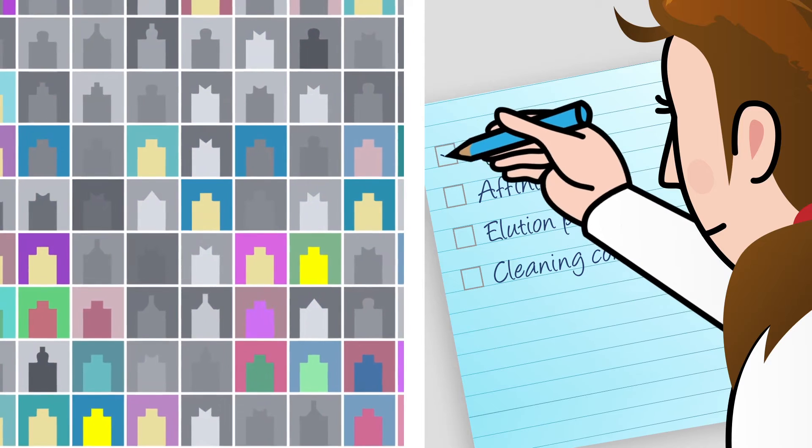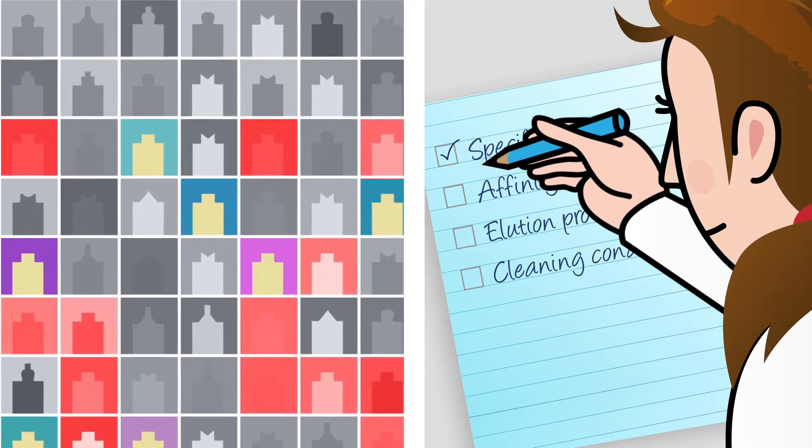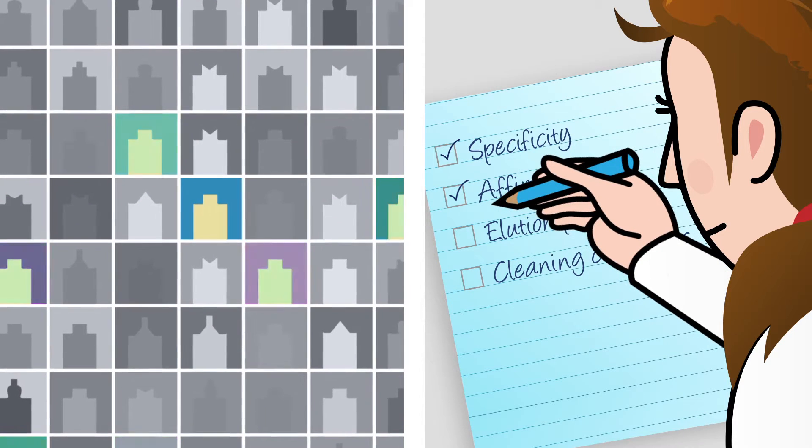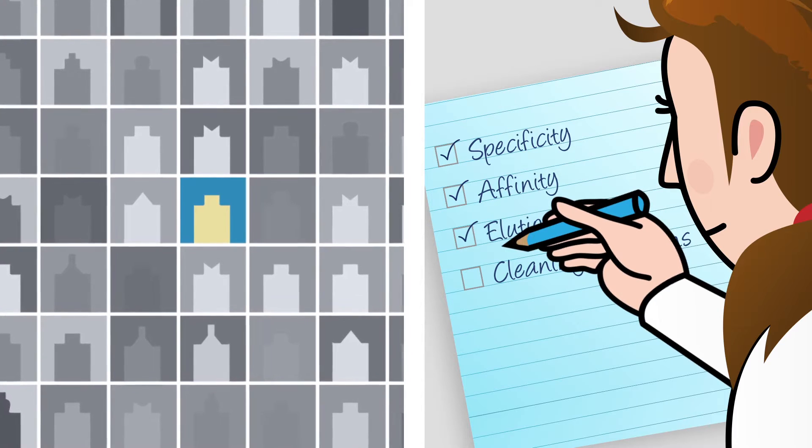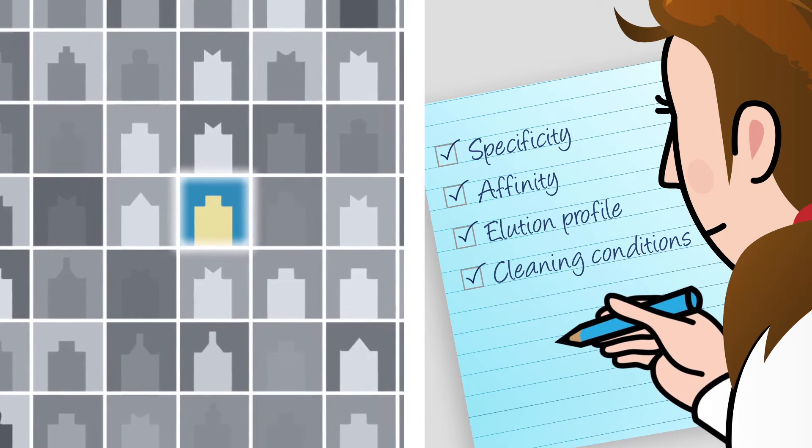Ligands for a specific target molecule are identified from expression libraries, providing an opportunity to select VHH molecules tailored for specificity, affinity, elution profile, and cleaning conditions.